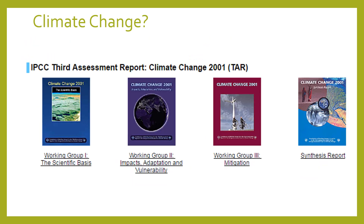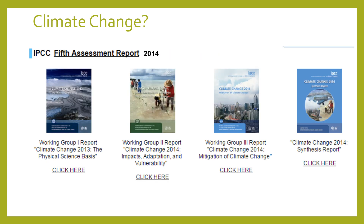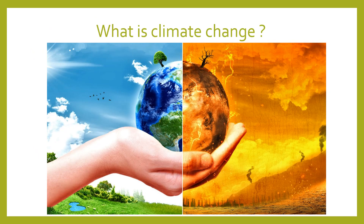The third assessment report came out in 2001, which included more information on adaptation, vulnerability, and mitigation for climate change. This was followed by the fourth assessment report in 2007, and the latest is the fifth assessment report in 2014. A sixth assessment report is forthcoming and everybody is waiting for that.